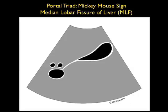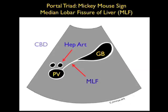Here's an illustration showing the relation of the gallbladder to the portal vein, known as the exclamation dot sign. The exclamation would be made up by the gallbladder and the dot would be the portal vein. We see a thin white line connecting the gallbladder to the portal vein, known as the median lobar fissure of the liver, which can be a very helpful landmark as one looks to find the gallbladder in relation to the portal vein.